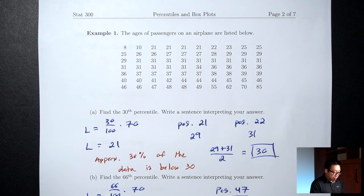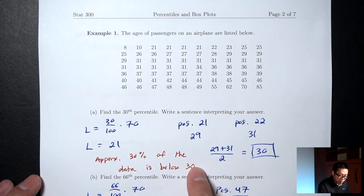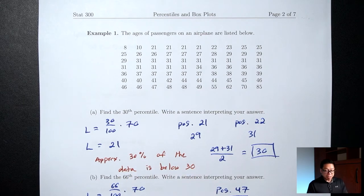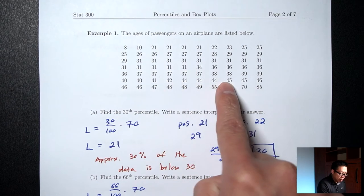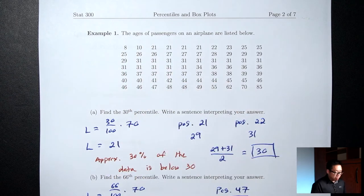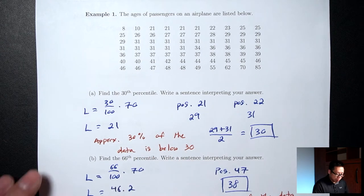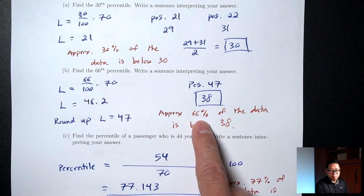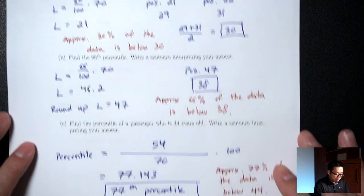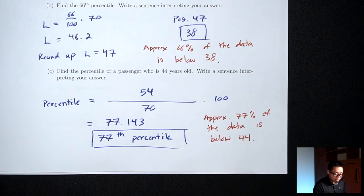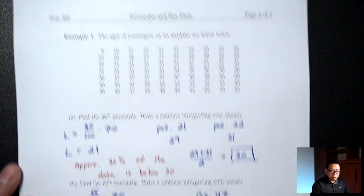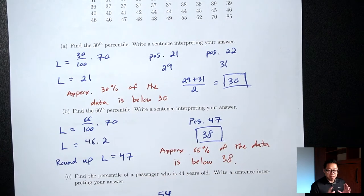Second disclaimer: I'll write a generic interpretation for all answers, just changing the percent and data value, and that's fine for this class. A better sentence that matches the context would be something like 'approximately 77% of passengers have ages less than 44,' but the generic form is acceptable.